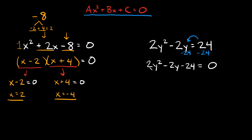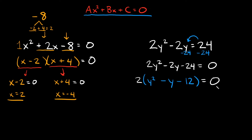The first thing you want to do is see if there's anything you can factor out of all three terms. These are all divisible by 2, so I can pull a 2 out. Dividing through: 2y² ÷ 2 = y², -2y ÷ 2 = -y, and -24 ÷ 2 = -12. So we have 2(y² - y - 12) = 0.